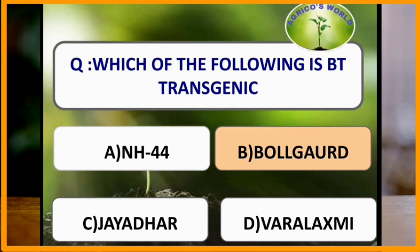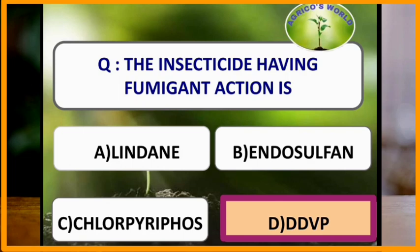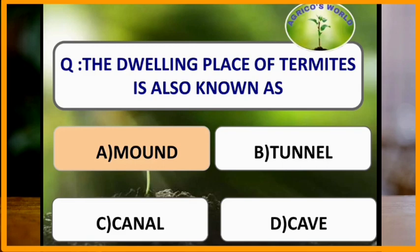The insecticide having fumigant action is Dichlorvos. A fumigant is a toxicant that enters in vapor form into the tracheal system — it is a respiratory poison. The fumigant enters into the tracheal system through the spiracles.